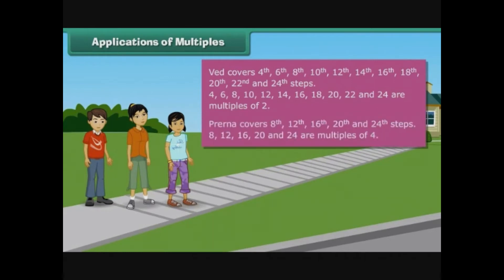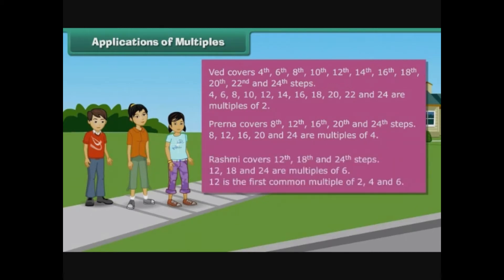Prerina covers the 8th, 12th, 16th, 20th and 24th steps. Eight, twelve, sixteen, twenty and twenty-four are multiples of four. Rashmi covers the 12th, 18th and 24th steps. Twelve, eighteen and twenty-four are multiples of six.